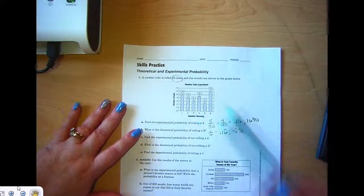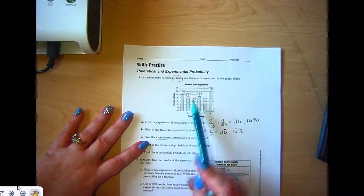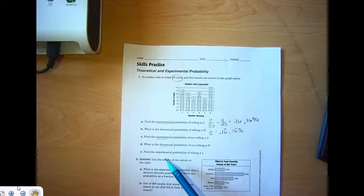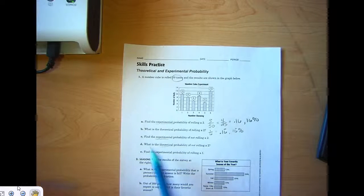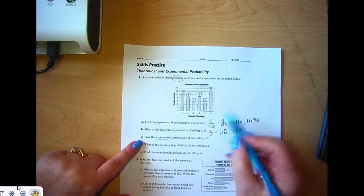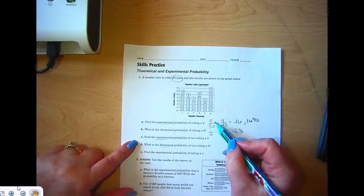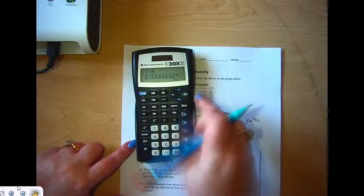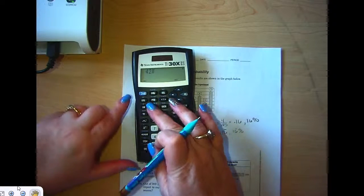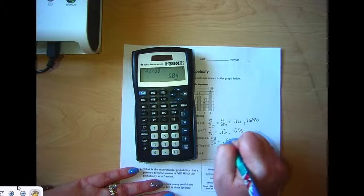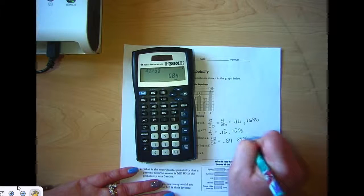You're going to go through this, and where it says experimental data, you're going to use data from the experiment. When it says theoretical, you're going to think about in theory, when you're thinking about a dice, what's the theory that something will or won't happen. Let's look at: find the experimental probability of not rolling a 2. Well, if the experimental probability of rolling a 2 was 8/50, not rolling a 2 is going to be 42 out of 50, right? So 42 divided by 50 is 84 hundredths, and so that's 84 percent.